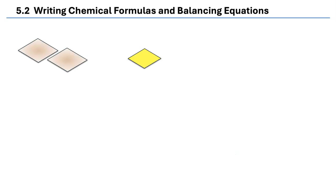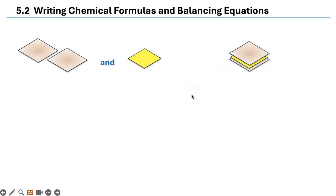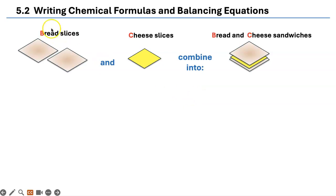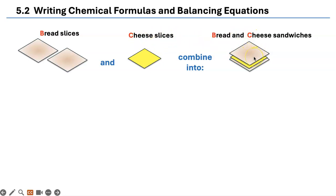I'm going to show you this using a simple example — let's just make a cheese sandwich. You have two pieces of bread and one slice of cheese to make one cheese sandwich. We're going to use B to signify bread slices and C for cheese, not carbon. And BC for bread and cheese sandwich. After all, the chemical formula is the recipe for making a compound.